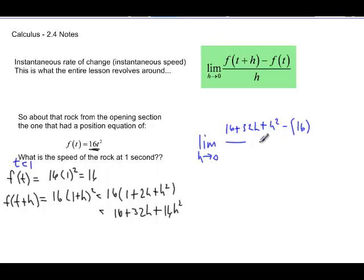If I substitute 0 in right now, I get a 0 in the denominator. However, if you'll notice on top, my 16s will cancel each other out, and there's an h in each piece that's left.